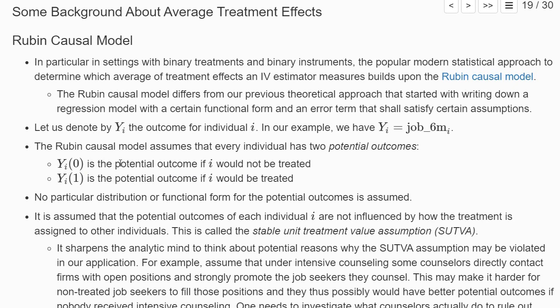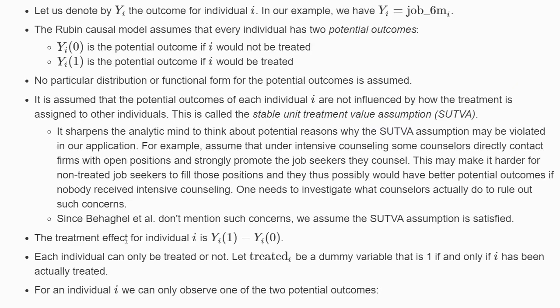It could be that he only finds a job if he gets intensive counseling — then Yi(1) equals one while Yi(0) equals zero — or the other way around in principle. There is no particular distribution or functional form assumed for these potential outcomes, so they can differ freely for each individual depending on whether they receive the treatment or not.